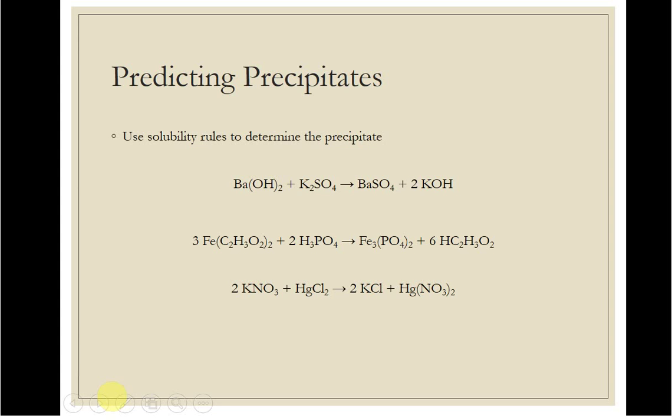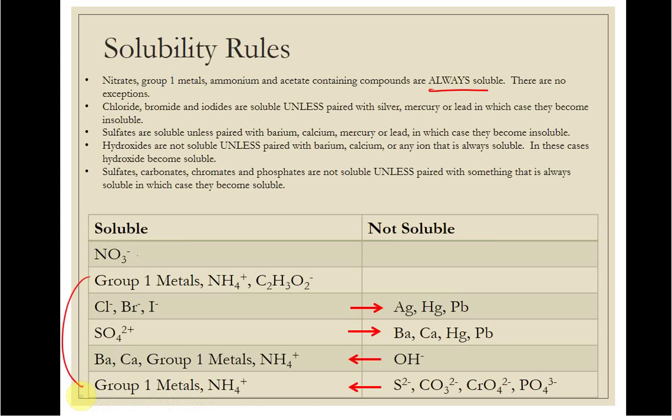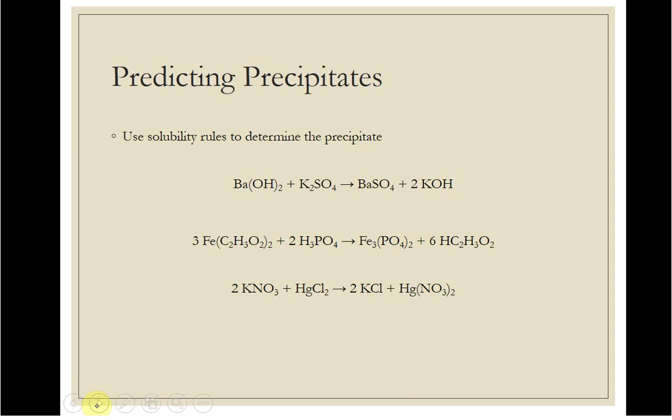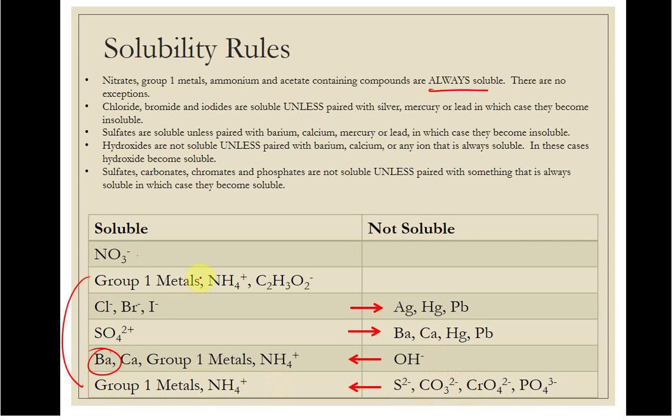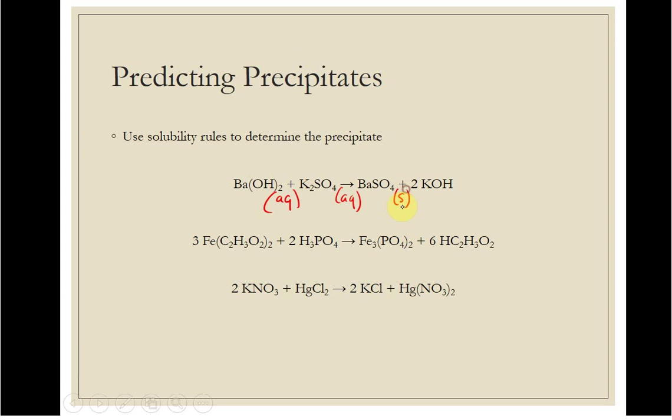So barium hydroxide. If we go back to our rules, hydroxides are not soluble. Oh, but barium can force it. It's kind of like having a wallflower at a party who wants to stand at the edge of the room, but their date forces them to socialize. So this is going to be an aqueous compound. Group 1 metal, this is aqueous. Sulfates, there it is. Sulfates are soluble, but barium doesn't like to be soluble, so it will force this to be a solid and precipitate out. Group 1 metal, everything with group 1 metal is aqueous. So here's our solid, or our precipitate.